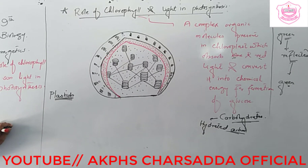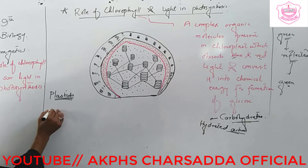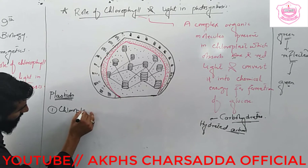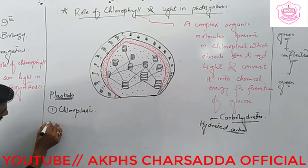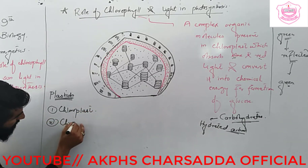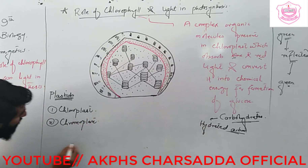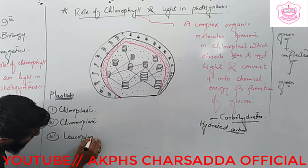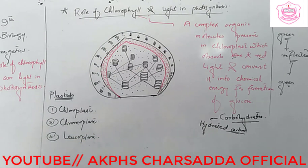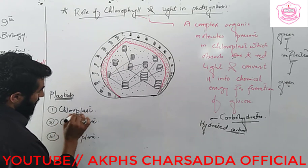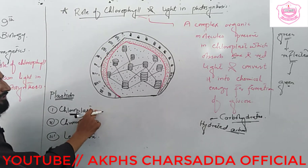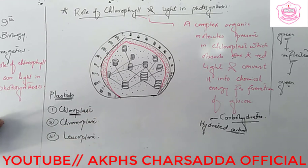There are three types of plastids: the first is chloroplast, the second is chromoplast, and the third is leucoplast. The chloroplast absorbs sunlight and gives green color to plants and prepares food for the plant.